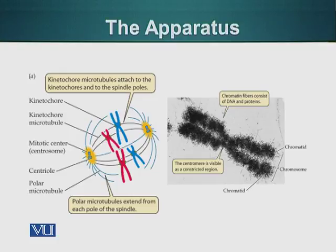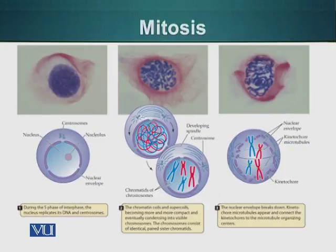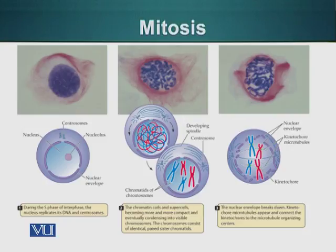Let's look at the phases of this process. At interphase, cells have basically replicated their DNA during the S phase, but they have not proceeded to mitosis. The nuclear envelope is intact. The centrosomes, however, have divided, and the DNA inside the nucleus has also divided.